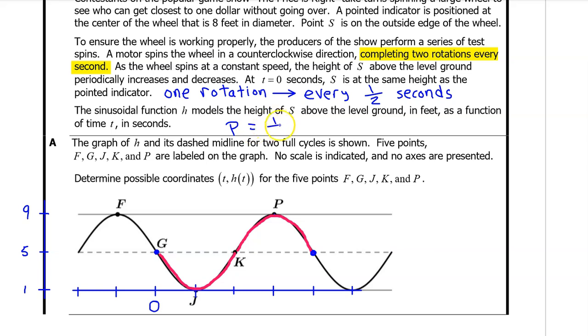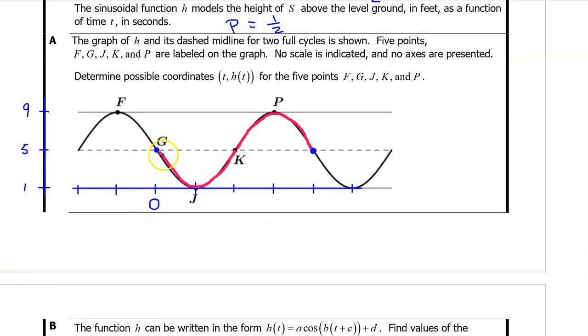Since we've highlighted a cycle that begins at t equals zero and the period is one half, the input value at the end of the cycle must be one half. Half of one half is one fourth. So that's the input value that goes right here. Half of one fourth is one eighth. So that is this input value. We can use the first input value after zero to find any missing input values. We will simply count by one eighth.